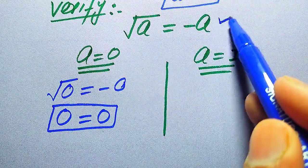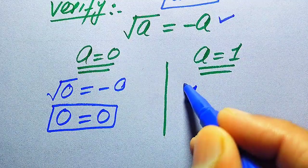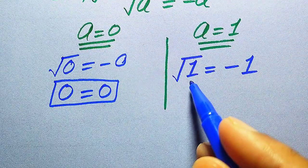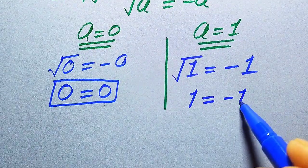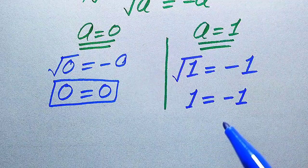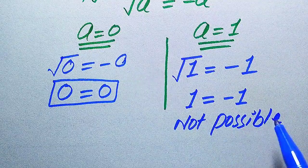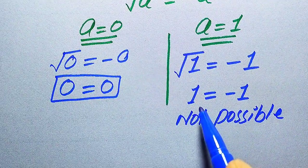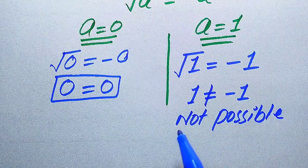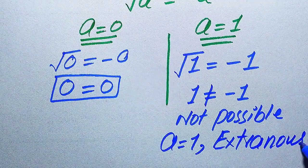We conclude that A equals 0 is satisfied over this given question statement. Now we verify the second value: we substitute A equals 1 on both sides and it becomes square root of 1 equals minus 1. Square root of 1 is 1, so we have 1 equals minus 1. You see that 1 is not equal to minus 1 — it is not possible that a positive value equals a negative value — so A equals 1 does not satisfy the given equation.